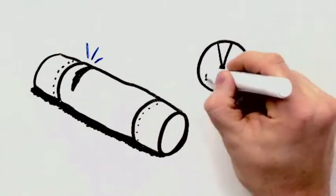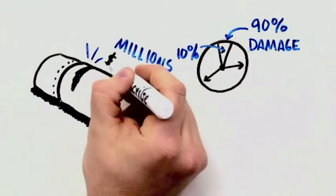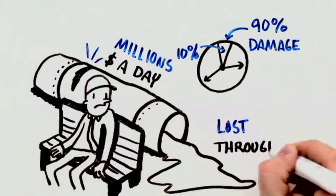90% of corrosion damage happens in 10% of the time and it costs millions of dollars a day in downtime and lost throughput.